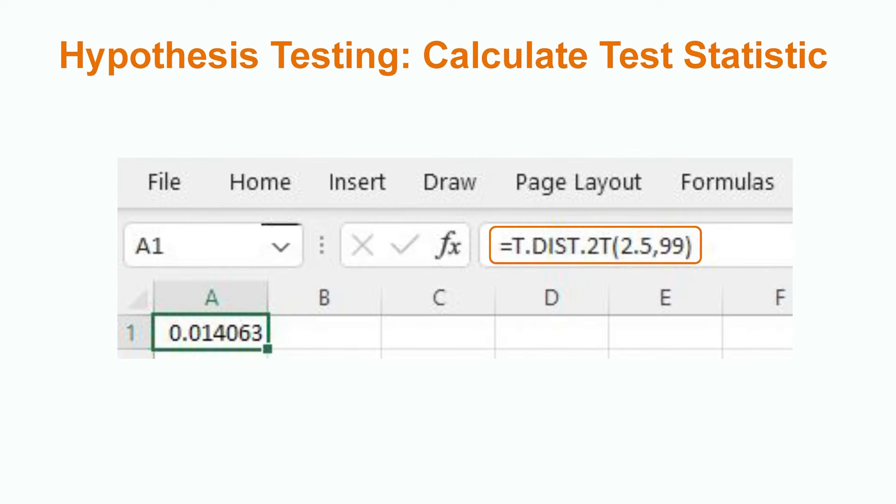It is now time to calculate our p-value. Please note that the critical value approach can also be used, but we will not cover it in this lesson. For a two-tailed p-value using the statistical software of your choice, such as shown here in Excel, we use the formula T.DIST.2T and input our test statistic and degrees of freedom. This gives us a p-value of 0.0141.